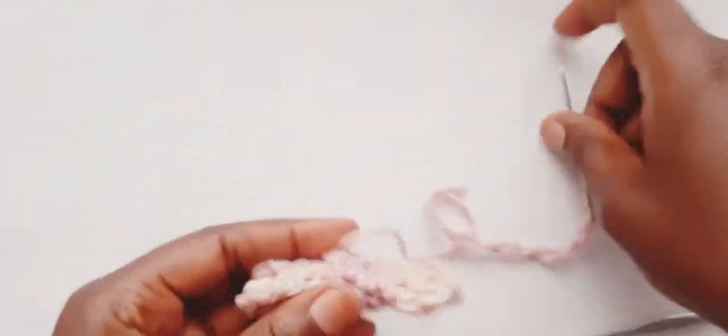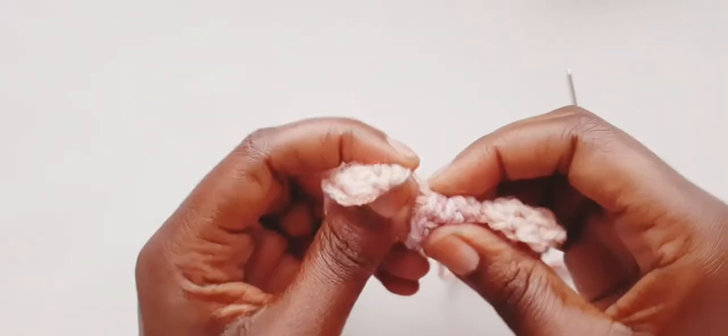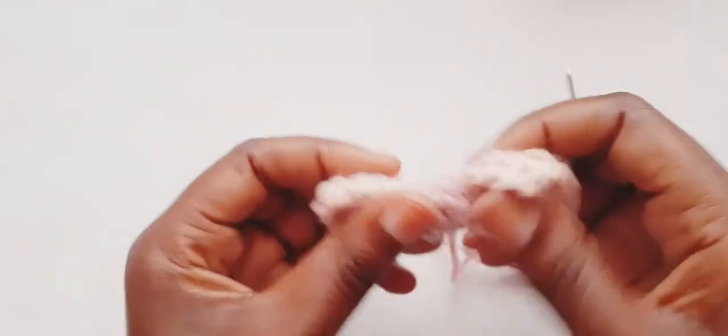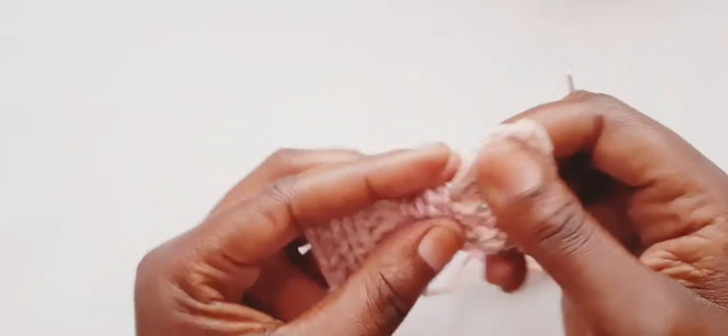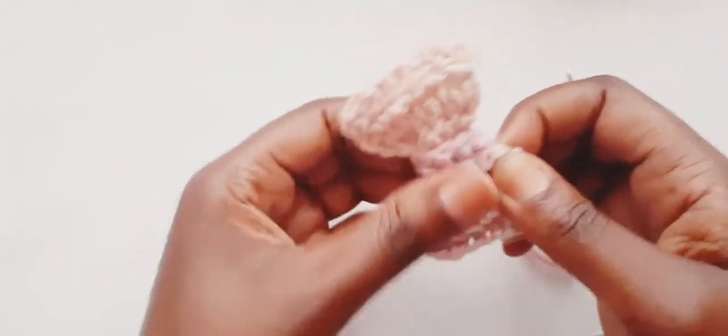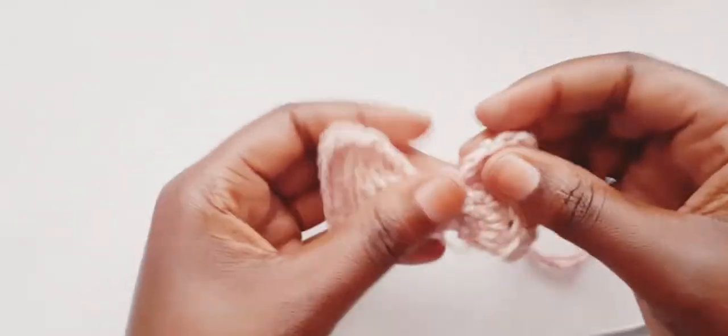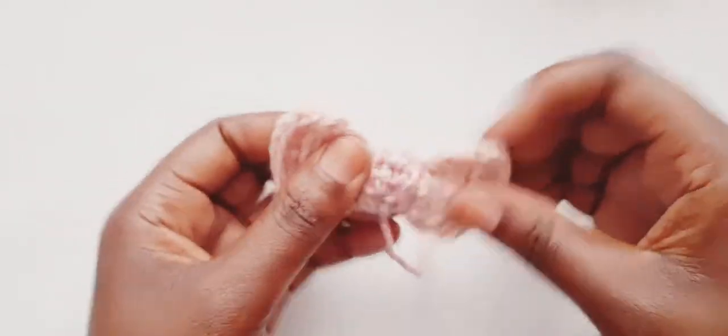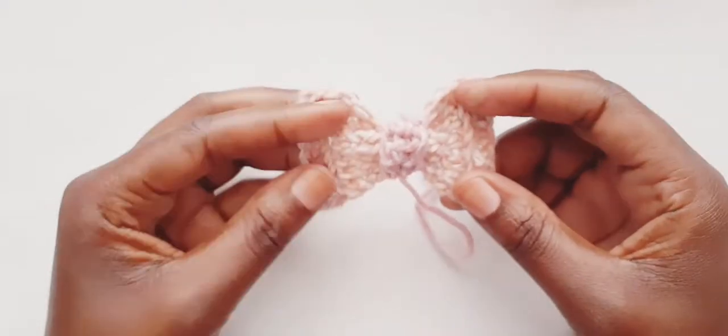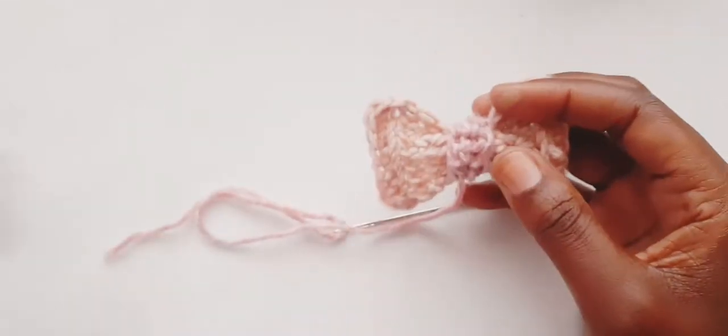Okay, so just leave the tail on because we are going to use it to sew this bow onto something. So now you just fluff it out or puff it out like so to give it its shape. Okay, there we go, just like the other one.